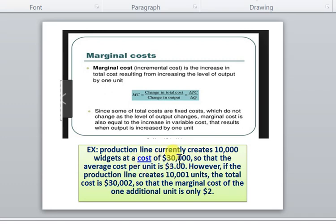It is 30,000 divided by 10,000, so total cost by number of units equals 3 dollars per unit. However, if the production line creates 10,001 units, the total cost will change to 30,002 dollars, so the marginal cost of one additional unit is only 2 dollars.